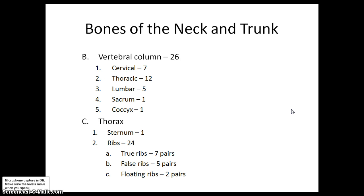The vertebral column has 26 bones — just like 26 letters in the alphabet. They're broken down by regions: cervical, thoracic, lumbar, sacrum, and coccyx. An easy way to remember the numbers: you have breakfast at 7 (cervical), lunch at 12 (thoracic), dinner at 5 (lumbar), and then one sacrum and one coccyx.